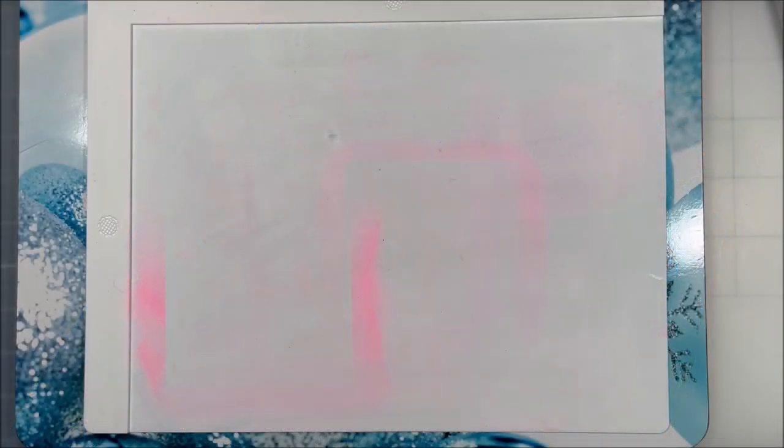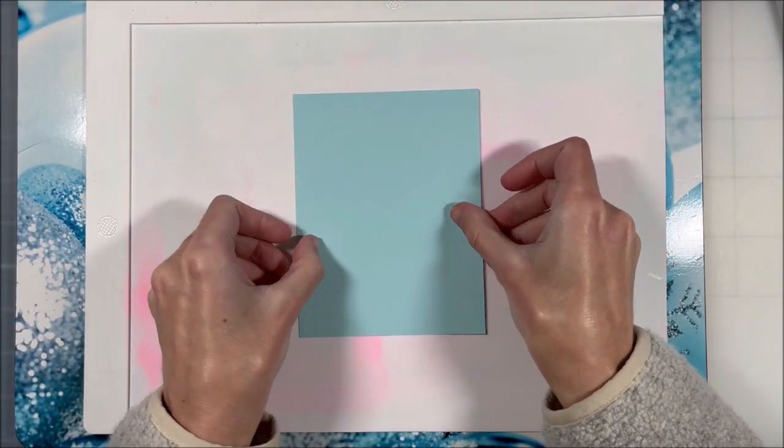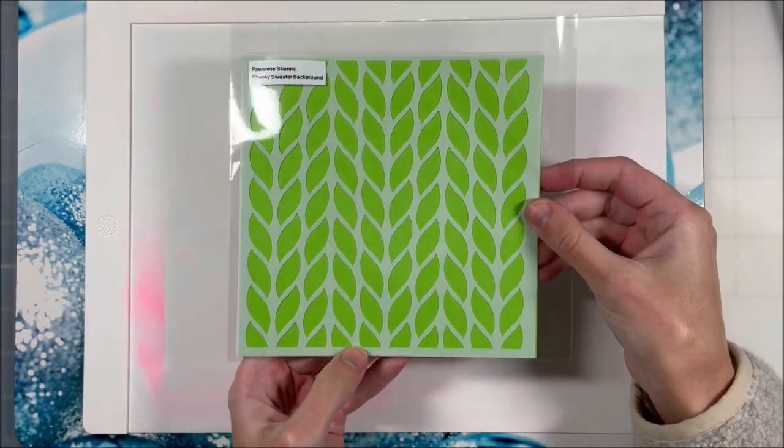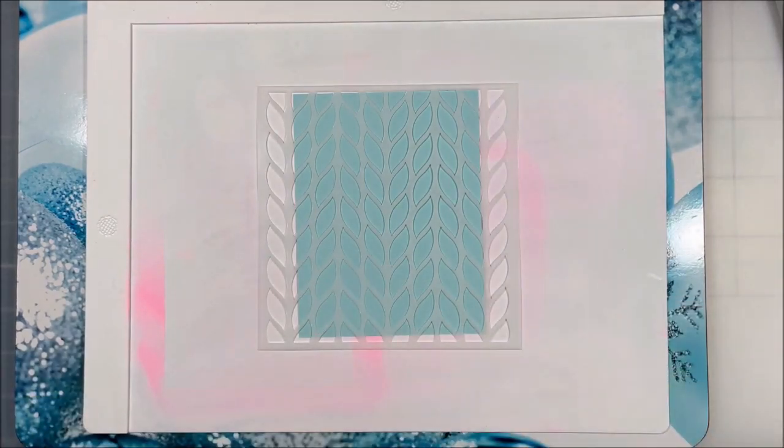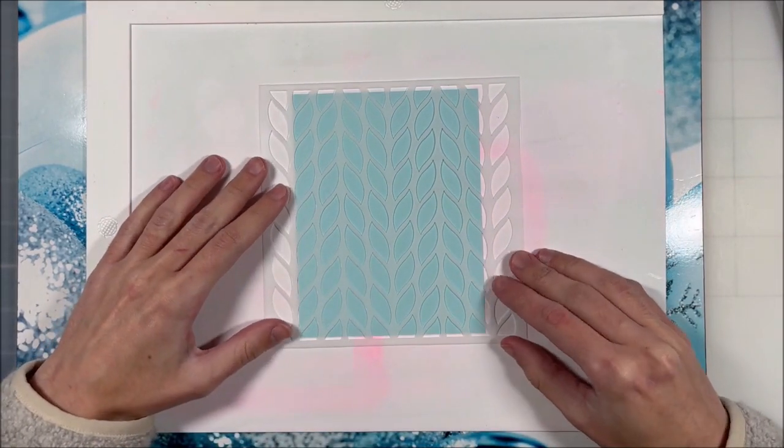I'm gonna start off with my stenciling. I have my Waffle Flower media mat which I like to do my ink blending on, and I'm gonna use the Pawsome Stamps Chunky Sweater background. I love this stencil, it is so cute and perfect for any cozy sort of winter cards.